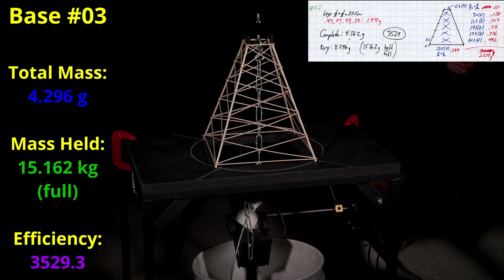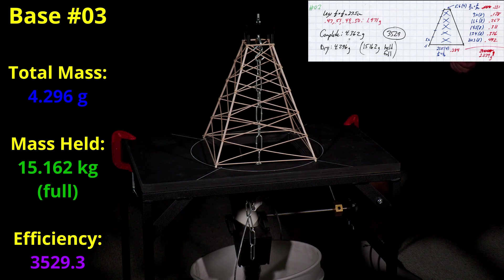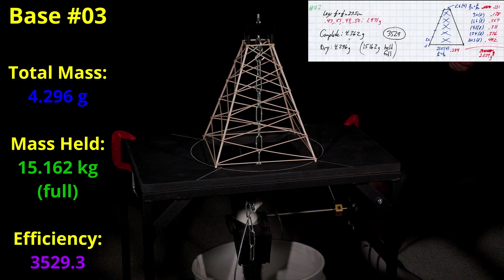For base number three, I used slightly stronger legs and increased the cross member overall mass by about 9%. I didn't want to go crazy increasing the cross bracing weight, but I did make sure that the bottom piece was almost 20% stronger, so hopefully it wouldn't break early again.